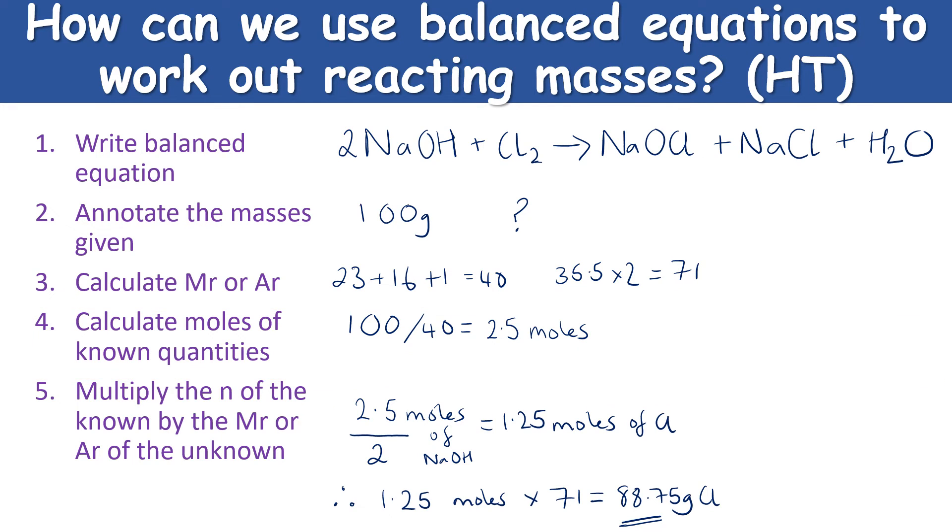Now step five: this is the bit where some students can go wrong because they're not so sure about ratios. Looking at the balanced equation, and this is why the balanced equation is so important, I can see that for every one molecule of chlorine I need two molecules of sodium hydroxide. So it's a two to one ratio, sodium hydroxide to chlorine. So if I've got 2.5 moles of sodium hydroxide or reacting masses of sodium hydroxide, I must have half of that in terms of chlorine. So 2.5 divided by 2 gives me 1.25, and that is the number of moles of chlorine gas. And now that I've got the number of moles for chlorine, I know the Mr for chlorine, I can then work out the mass in grams just by rearranging the mole equation. So 1.25 moles multiplied by the relative formula mass of chlorine, which is 71, and that gives me a mass of 88.75 grams.